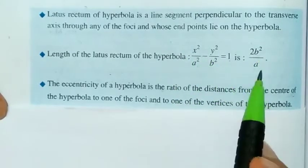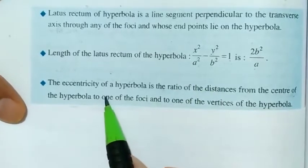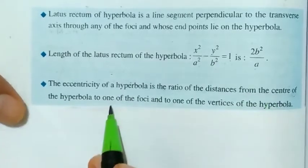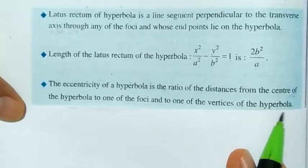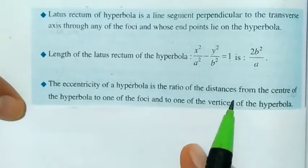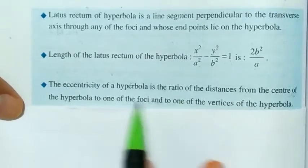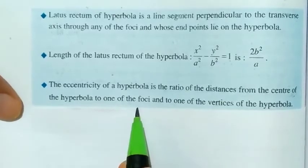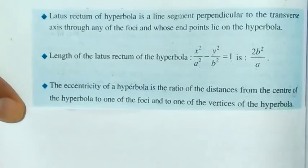The eccentricity of a hyperbola is the ratio of the distance from the center of the hyperbola to one of the foci, to the distance from the center to one of the vertices of the hyperbola. First find the center-to-focus distance, then the center-to-vertex distance; their ratio is the eccentricity.